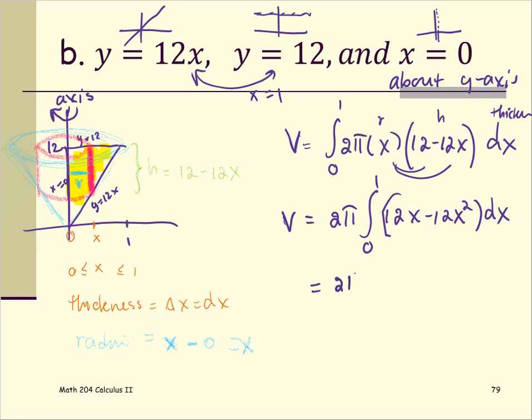We see 12 in common. When you find the antiderivative, x becomes x squared over 2, and 2 and 12 simplify, so it becomes 6x squared. Minus 12x squared becomes 12x cubed over 3, and 3 and 12 reduce to 4, so 4x cubed.